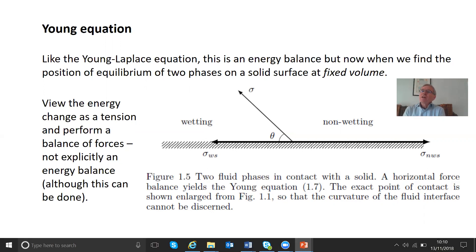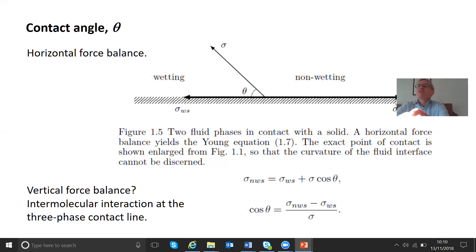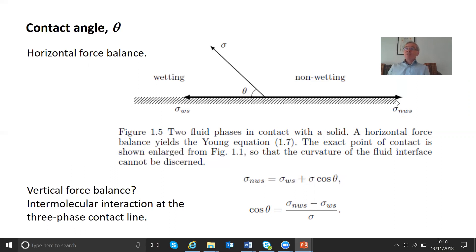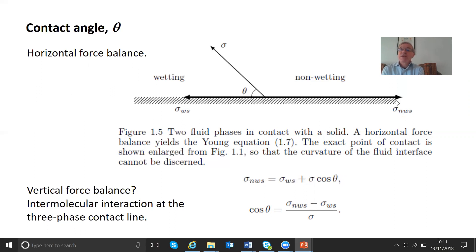There is a force balance we need to consider. There is an energy associated with the interface between the wetting phase and the solid, so it's sort of pulling back, and there is also an interface between the two fluids that creates a force. So we do a horizontal force balance: the interfacial tension between the non-wetting phase and the solid equals the tension between the wetting phase and the solid, plus the horizontal component of the fluid-fluid interface force, which is sigma cos(theta). This gives you the contact angle, determined by the interfacial tensions of the solid and the fluid.